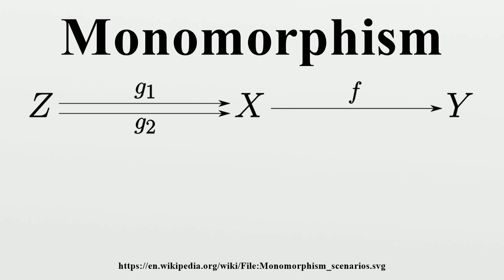A morphism f: X to Y is monic if and only if the induced map f*: Hom(Z,X) to Hom(Z,Y) defined by f*(h) = f∘h for all morphisms h: Z to X, is injective for all Z.